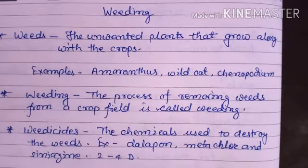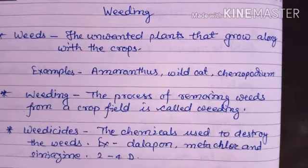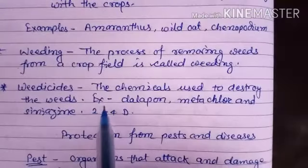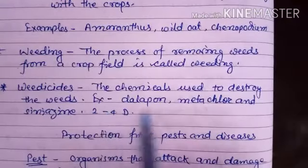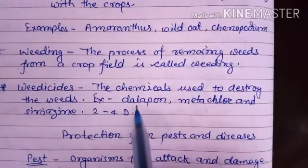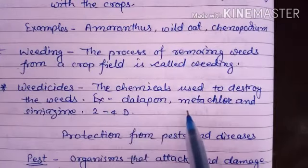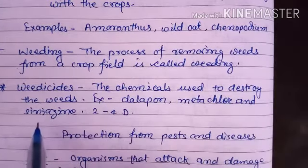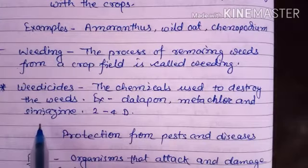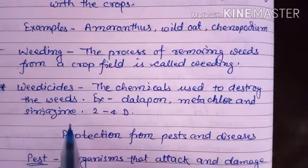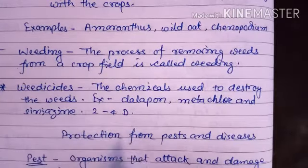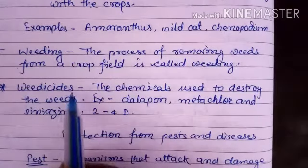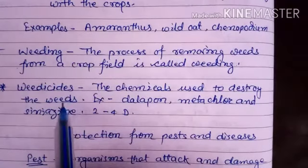Some examples of weedicides are Dalapon, Metachlor, Atrazine, and 2,4-D. These are some examples of weedicides.